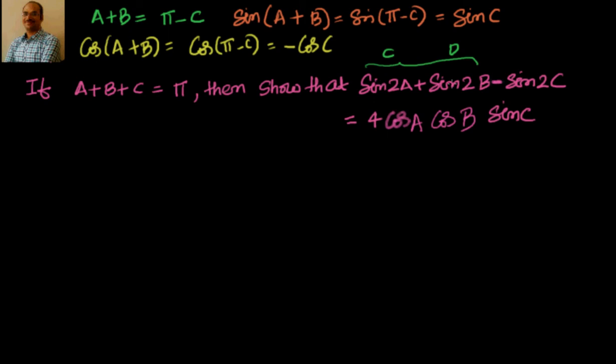Now sin 2a plus sin 2b I will write like earlier, this is nothing but sin c plus sin d. So I will have 2 sin of c plus d by 2, that is 2a plus 2b by 2. So I can write it as 2 sin of a plus b and cos of a minus b.